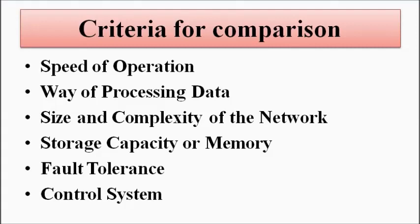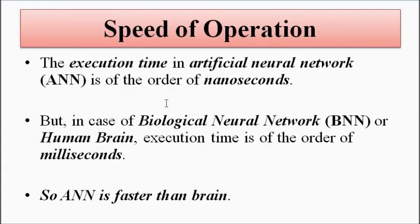The first criterion is speed of operation. The parameter used to determine speed of operation is execution time. In case of artificial neural networks, the speed of operation — which is the execution time, the time required to process an instruction and produce the result — is in the order of nanoseconds. But in case of the human brain or the biological neural network, the execution time is of the order of milliseconds.